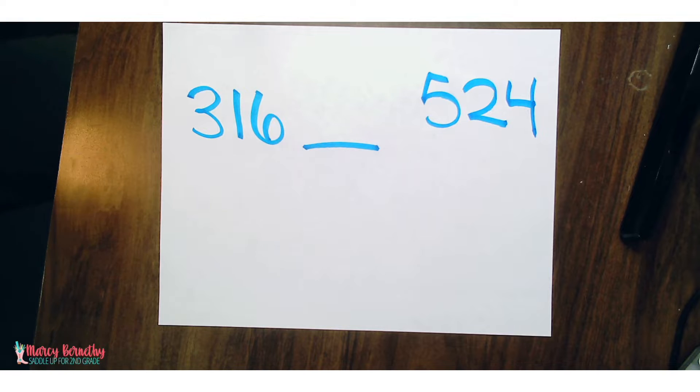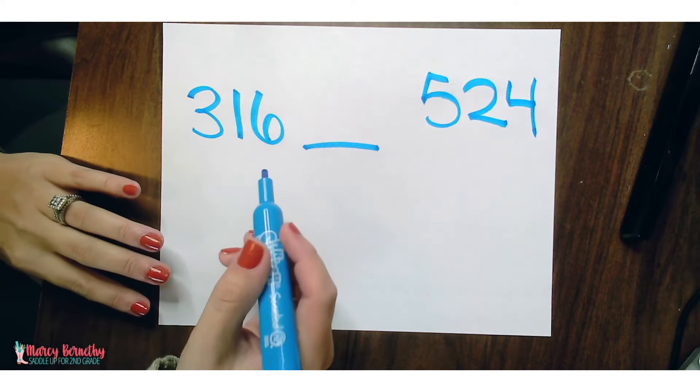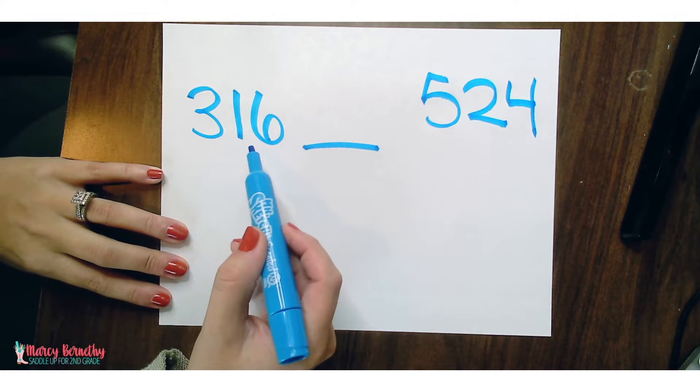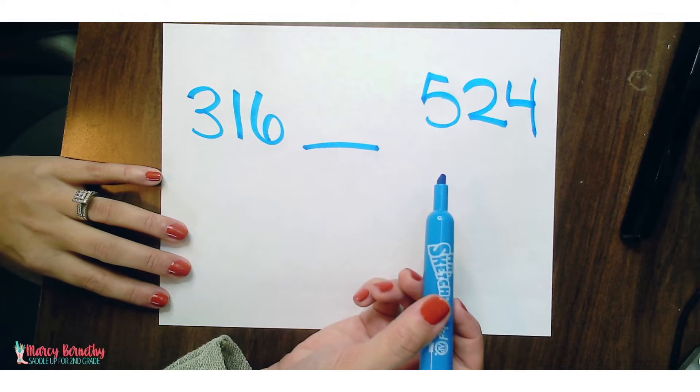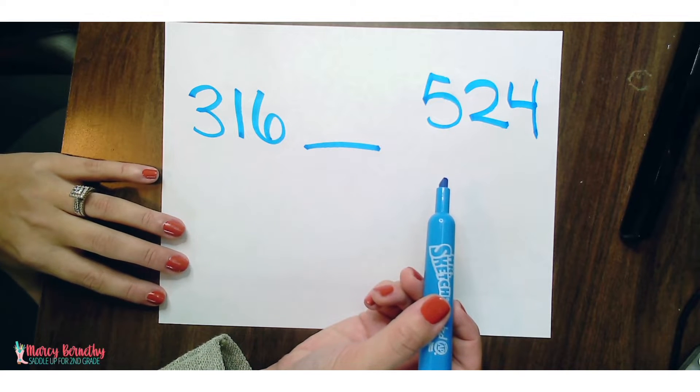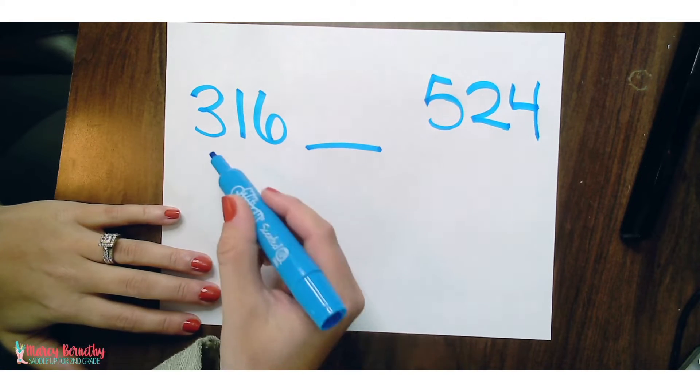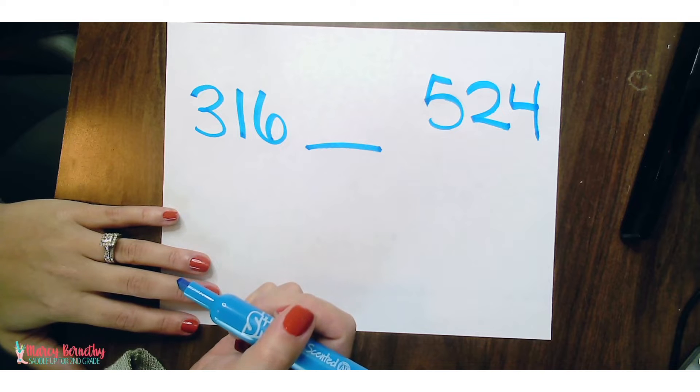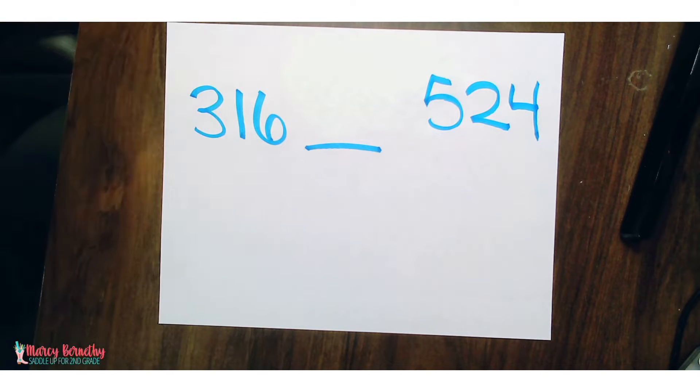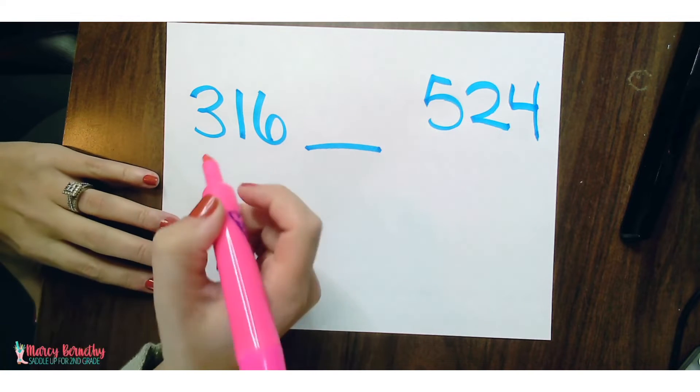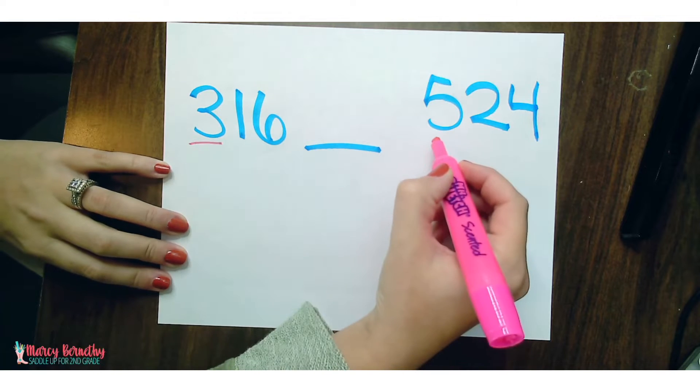We want to ask our students not just which one is the bigger number or which one is the smaller number, but we want them to be able to explain their thinking. So if we were looking at this problem 316 and 524, and we wanted to compare them using symbols, the first question that I would ask is what place value within our numbers are we going to look at first? So the first thing we want them to recognize is that we're going to look at the 3 and the 5.